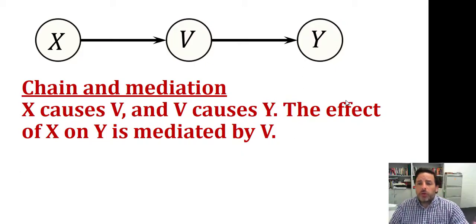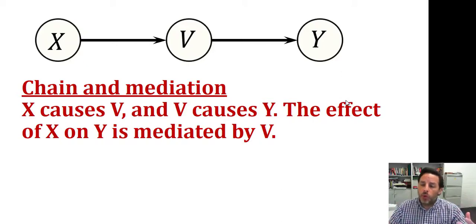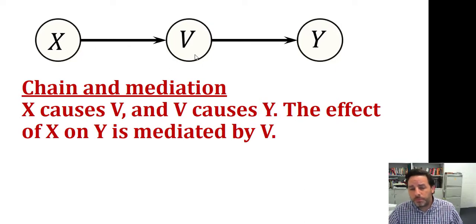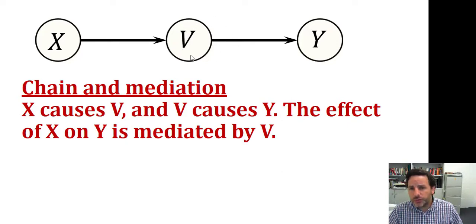So let's say there is an association between x and y. But this association, when we take v into account, disappears — because that association is explained by the causal relationship between v and y.